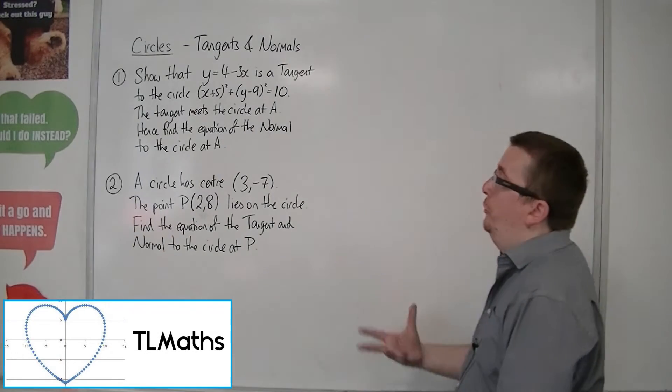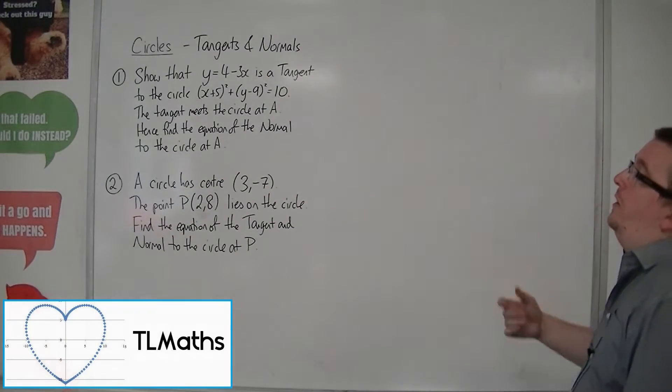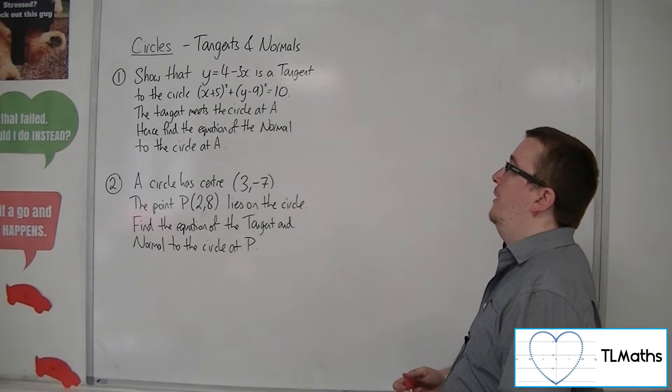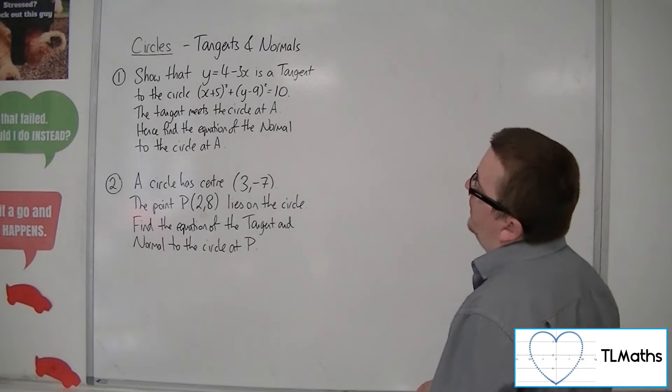So in this video we're going to go through two problems. First one, show that y equals 4 minus 3x is a tangent to the circle x plus 5 squared plus y minus 9 squared equals 10.